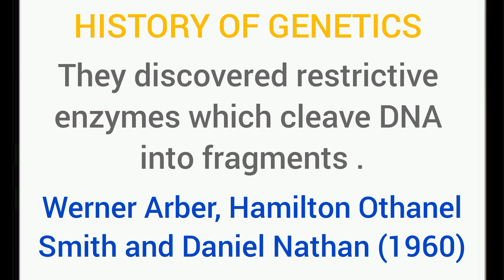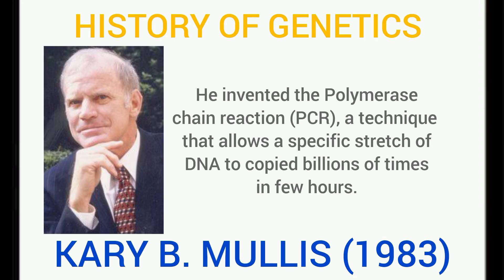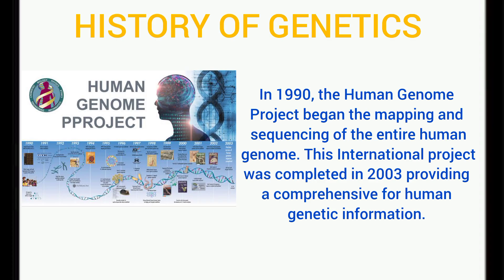Smith and Nathans discovered restriction enzymes, which cleaved DNA into fragments. Maxam, Gilbert, and Sanger developed some of the first techniques for sequencing DNA — to sequence DNA means to arrange the exact number of bases contained within the DNA. PCR, also called the polymerase chain reaction, was developed by Kary Mullis in 1983. It enables scientists to amplify a specific section of the DNA. Then, in the year 1990, the Human Genome Project began, involving the mapping and sequencing of the entire human genome — scientists were able to know all the biological information contained in the DNA of a human being.